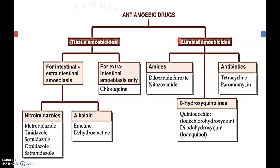Luminal amoebicides are classified into amides such as diloxanide furoate and nitazoxanide, 8-hydroxyquinolines such as clioquinol and diiodohydroxyquinoline, and antibiotics such as tetracycline and paromomycin.